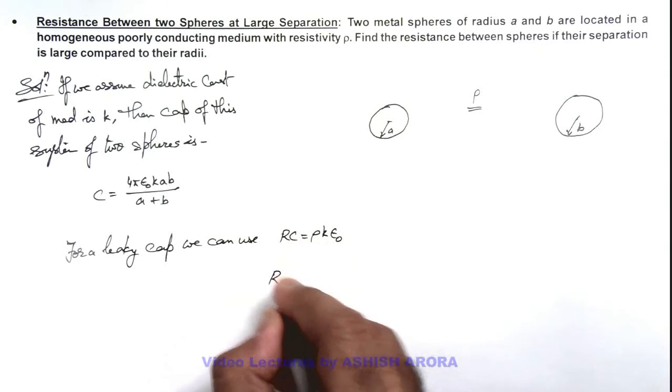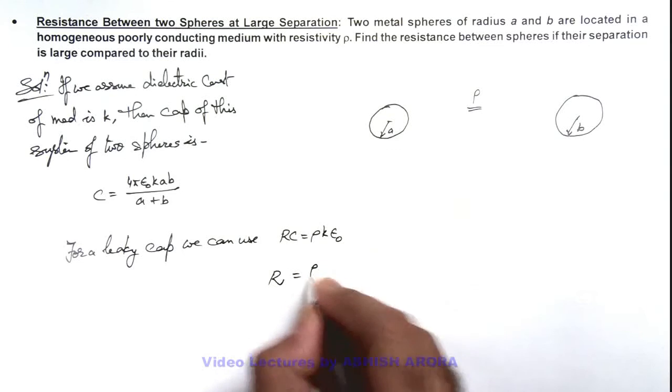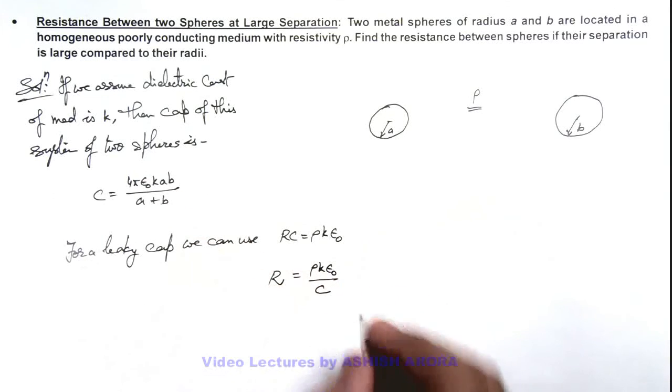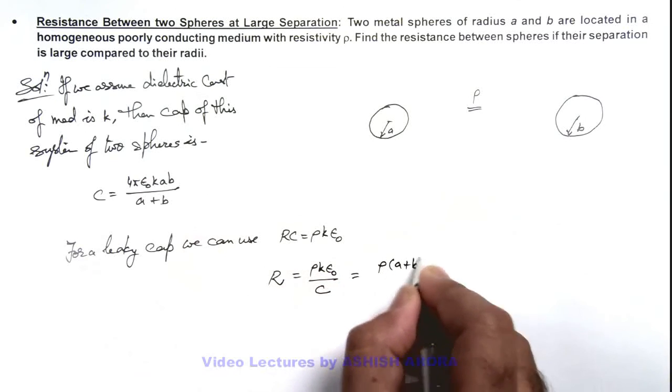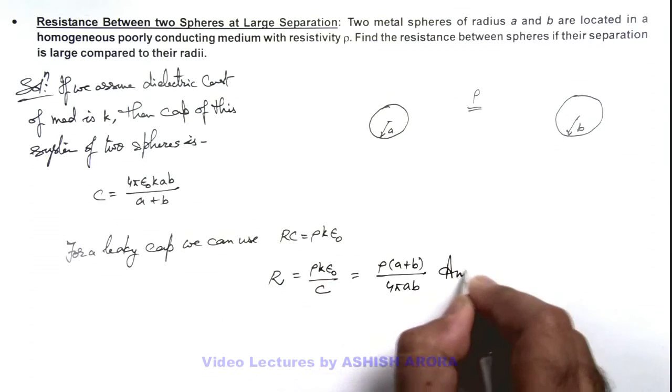So here the value of resistance between the two conductors can be written as ρ k ε₀ / C. If we substitute it here, this will give us R = ρ(a + b) / (4π ab). That is the result of this problem.